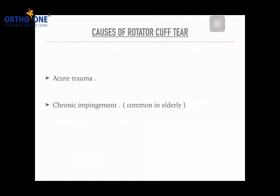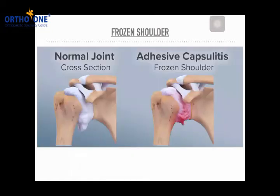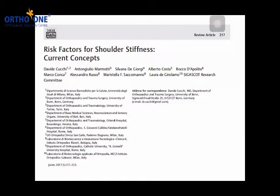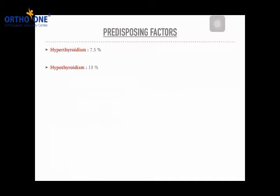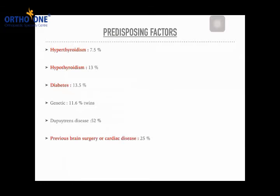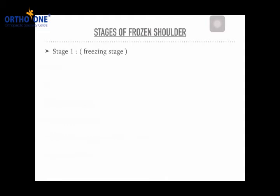The next most important cause of shoulder pain is frozen shoulder — a condition where all the ligaments and capsule become stiff. It is most commonly seen in patients who are hyper- or hypothyroid, patients with diabetes, patients with a family member already having this problem, and those with a previous history of brain or cardiac disease or shoulder surgery. I would like to stress that thyroid disease and diabetes are the most important reasons for shoulder stiffness, also called frozen shoulder.